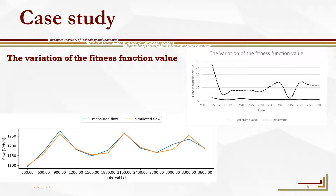After 100 generations, we got the result of the simulated output. When compared to the ground truth and the simulated output, the smallest difference in traffic volume between ground truth and calibrated output was 3.03%.